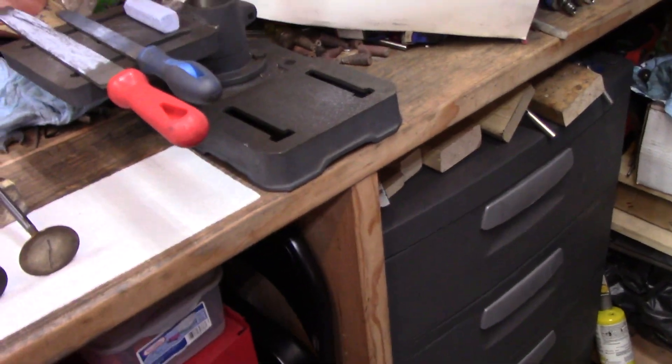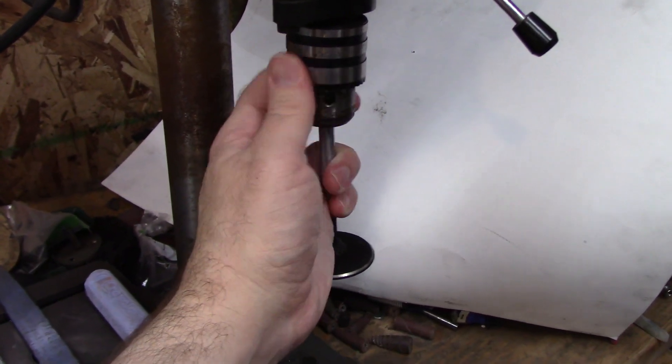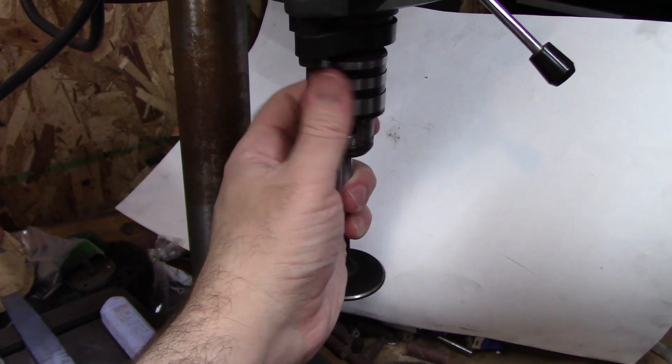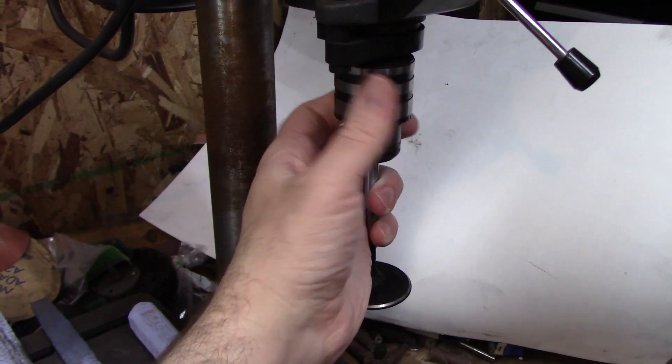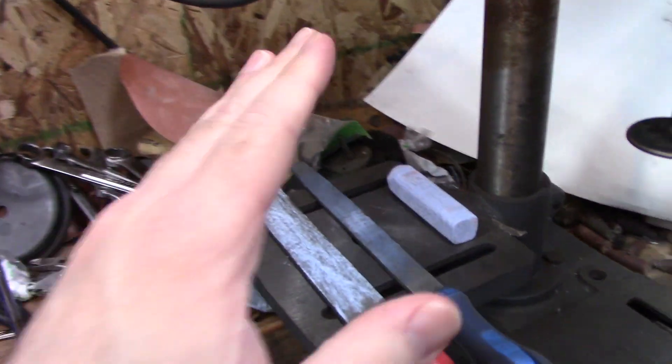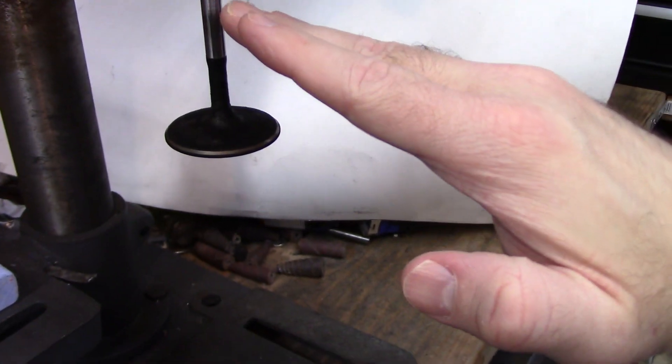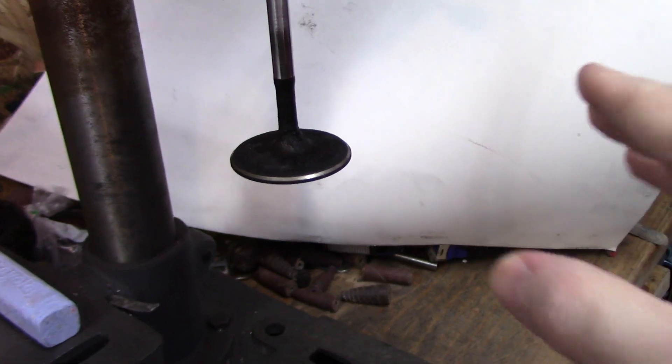To back cut your valve, there's various ways. The way I like to do it, I will chuck up the valve in my drill press. Oh, is it the right way? Oh, that's the wrong way. I'll get it here in a second. I will chuck up the valve just snugly in my drill press, and I will take a file and run it across. You have your 45, and you're just going to add a little bit of a 30 and give it a little more of an angle.